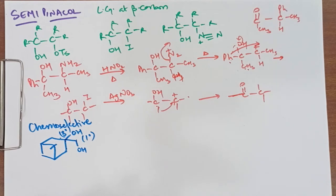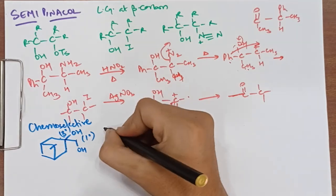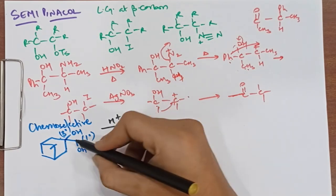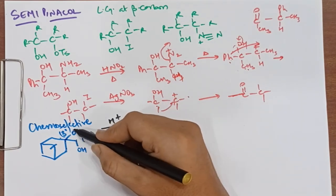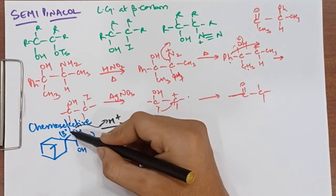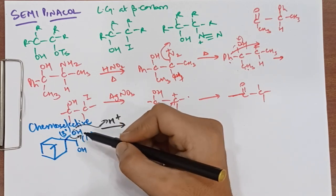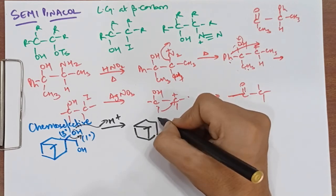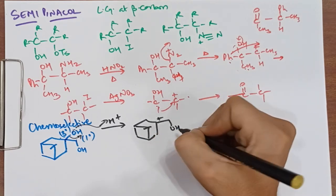Now if we add direct acid on it, then OH will react. This acid will grab water from here and remove the water, so we have positive charge here and OH will form again.